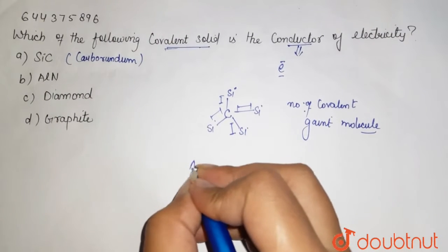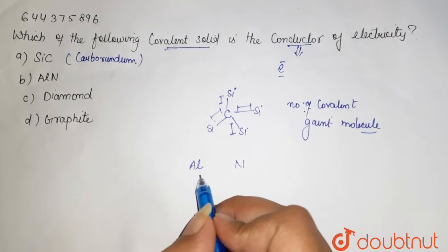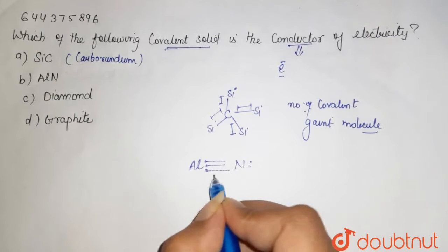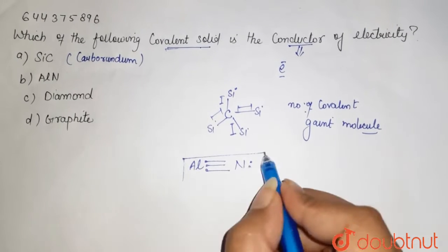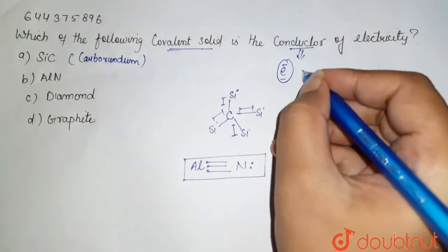Then we are having AlN, that is aluminum and nitrogen. This belongs to group 13, so it has three valence electrons. It forms the bond with nitrogen like this. This is the structure of your AlN. It does not conduct electricity because it does not have free electrons.